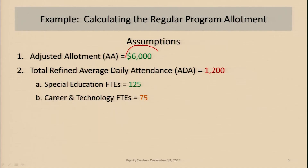Let's look at an example. Let's assume that the adjusted allotment turned out to be $6,000 — that's a pretty good-sized adjusted allotment, but I chose it because the math is easier. And let's say the ADA was 1,200. A lot of these numbers I'm using are smaller, but the math is appropriate even for Houston or Dallas — they just use much larger numbers. Most of Texas is composed of small towns, so these numbers are actually the more common ones.